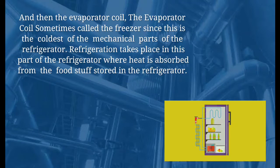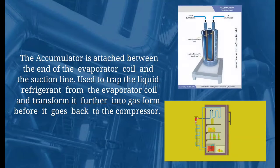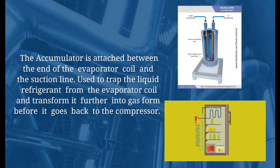The other end of the capillary tube is connected to the evaporator and accumulator. The accumulator is the junction between the end of the evaporator coil and the suction line. It is used to drop the liquid refrigerant from the evaporator coil and transform it further into gas form before it goes back to the compressor.